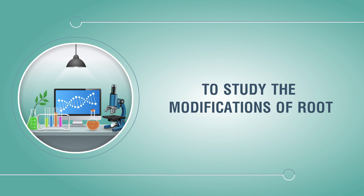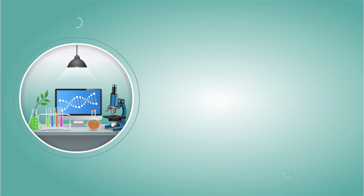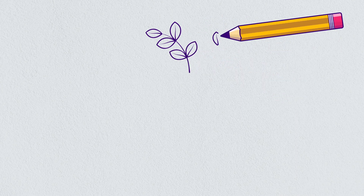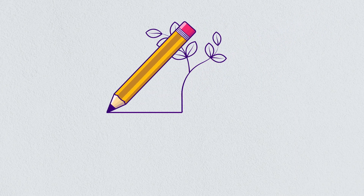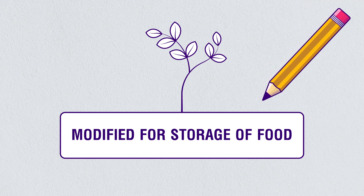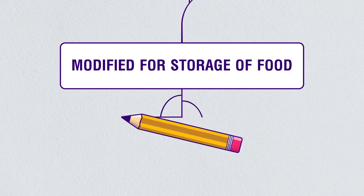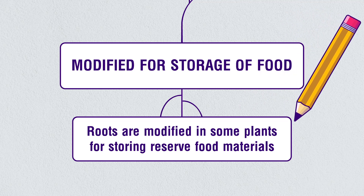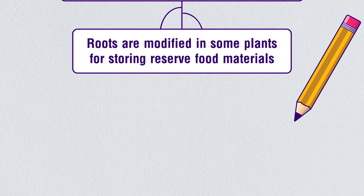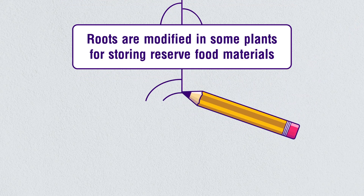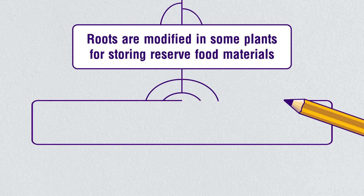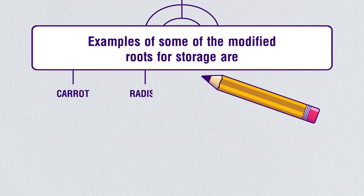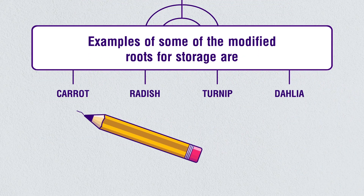To study modifications of roots, let's see some of the modifications of roots. Roots are modified in some plants for storing reserve food materials. Examples of some modified roots for storage are carrot, radish, turnip, and dahlia.